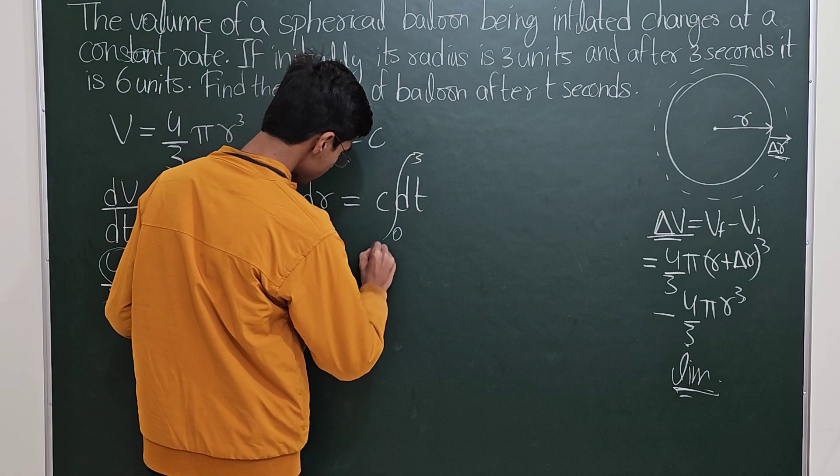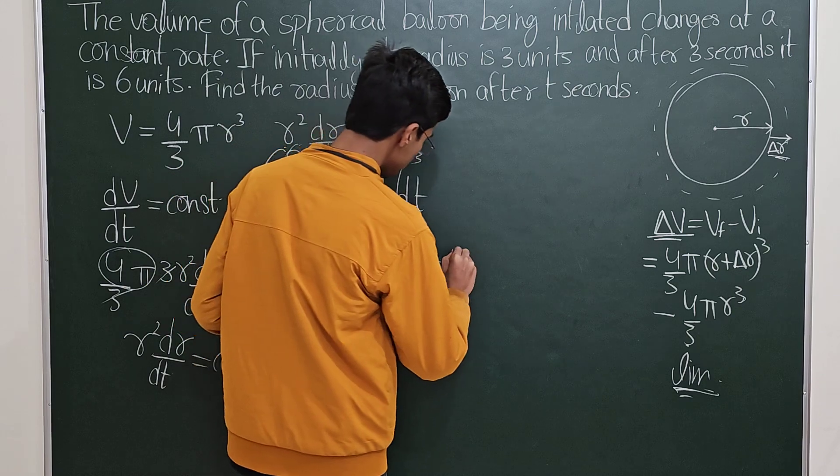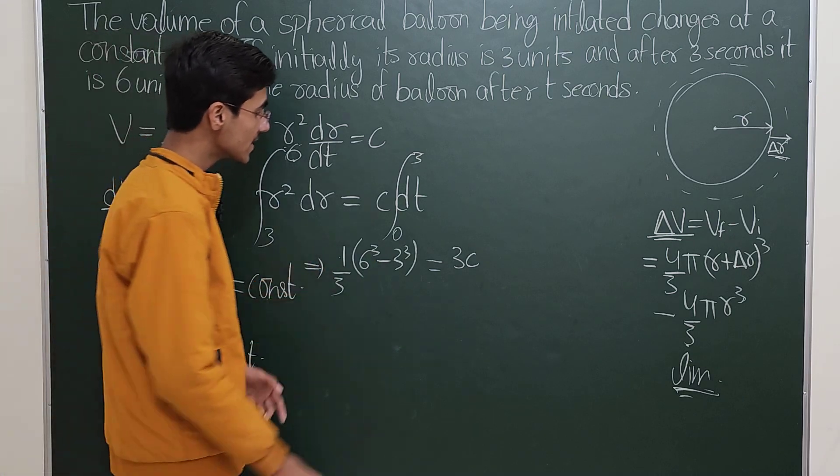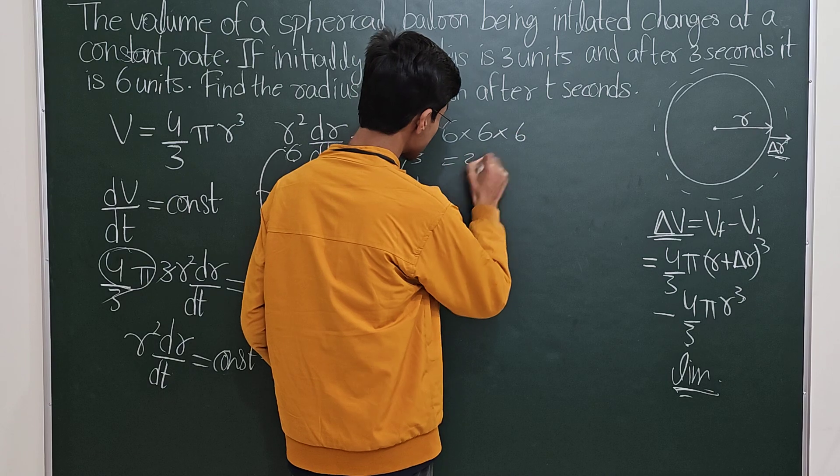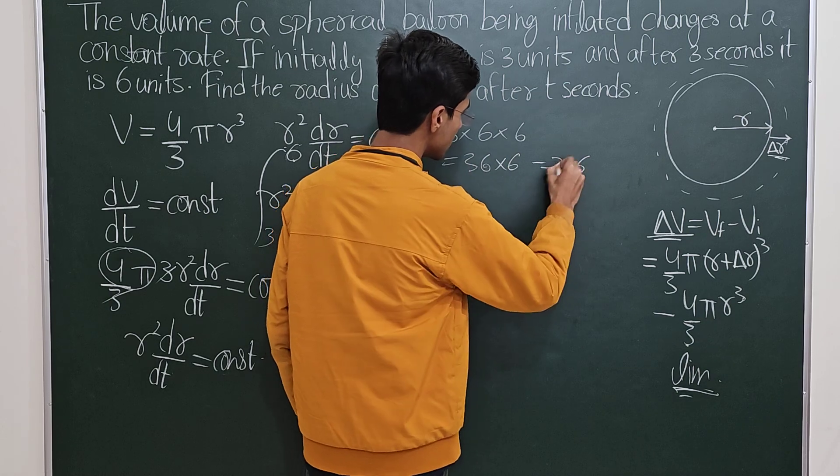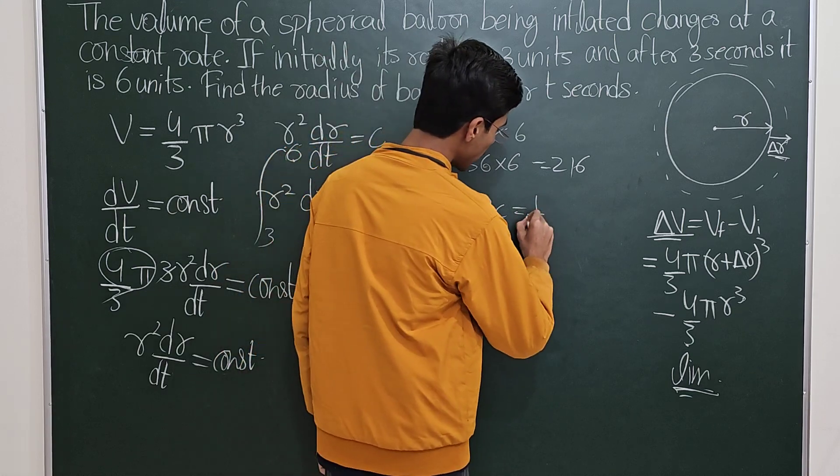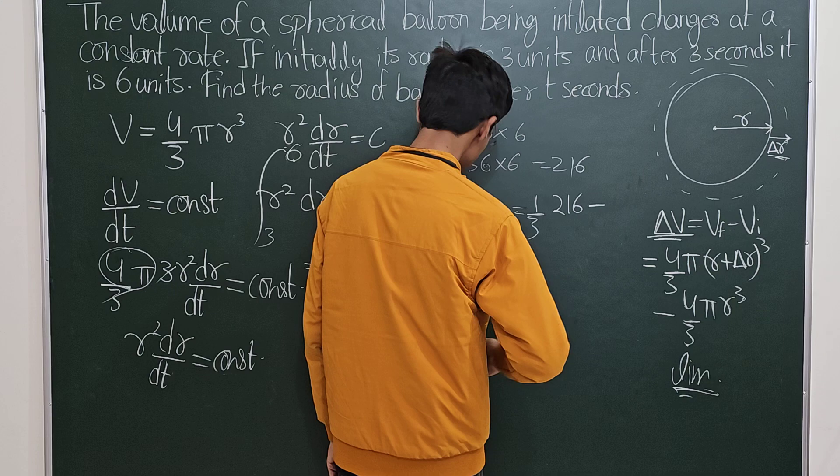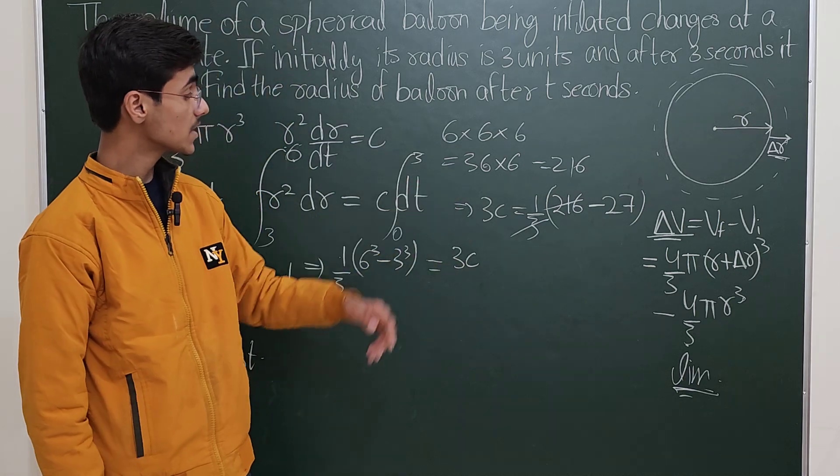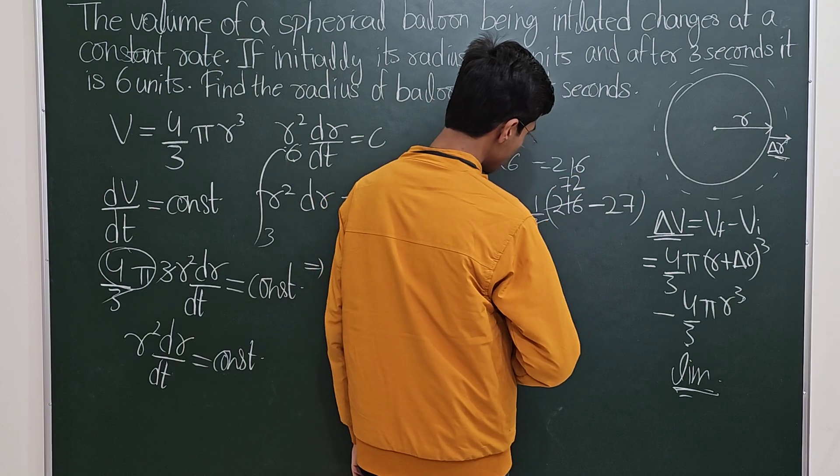Now this is r³/3, so you write this as 1/3(6³ - 3³), and this should equal c times this integral which is basically 3c. Here we get into some calculations. You have 6³, which is 6×6×6, which is 36×6, which is 216.